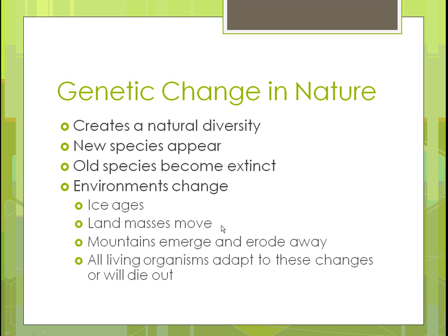We're first going to look at our natural resources and the genetic changes that happen in nature. We need to create natural diversity in ecosystems — if we do that, new species will appear by themselves and some old ones will become extinct. Survival of the fittest. Environmental changes like ice ages have wiped things out and allowed regrowth. Land masses have moved — the seven continents were once together and drifted apart. Mountains emerge and erode through tectonic plate activity.